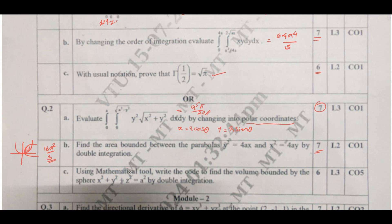The next question asks you to use a mathematical tool and write the code to find the volume bounded by a sphere. You can use MATLAB, Scilab, or Python code. If you write the correct mathematical code to find the solution, you will get 6 out of 6 marks.